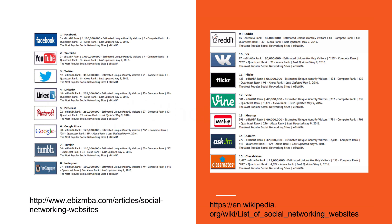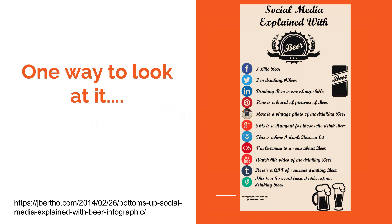Where should you be online? There are links to Wikipedia and eBiz MBA that show the most popular tools at the moment. A funny way to look at it is 'social media explained with beer' — each particular tool is a different way of saying something, a different way of having a conversation. Don't feel you have to be on all of them; understand what they do and see if they help you meet your business goals.